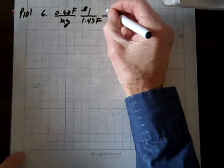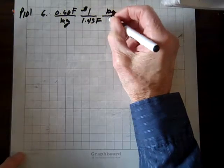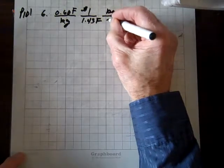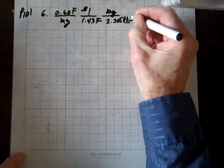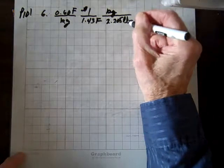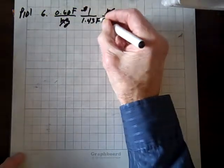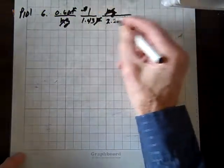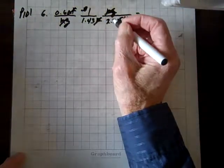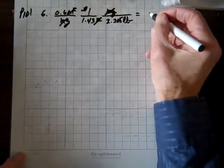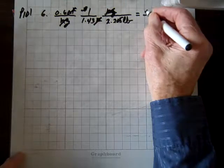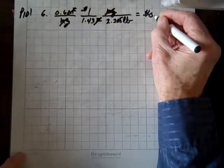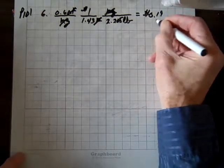We've got to get rid of these kilograms, and on page 101 you'll see there's 2.205 pounds per kilogram. The kilograms divide out, the francs divide out, and the only units left are dollars per pound. This becomes 19 cents, 0.19 dollars.